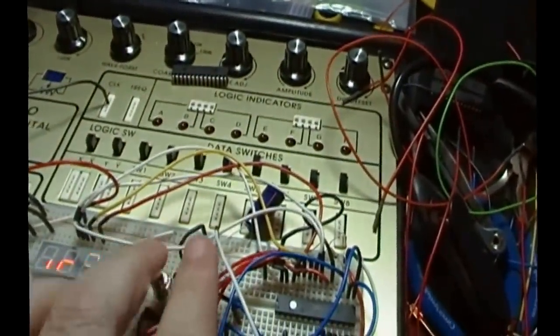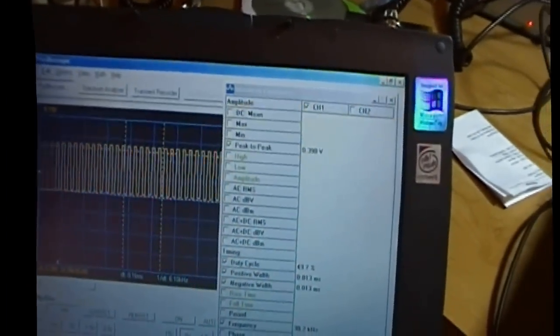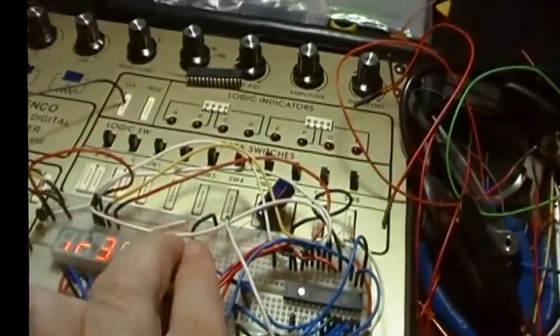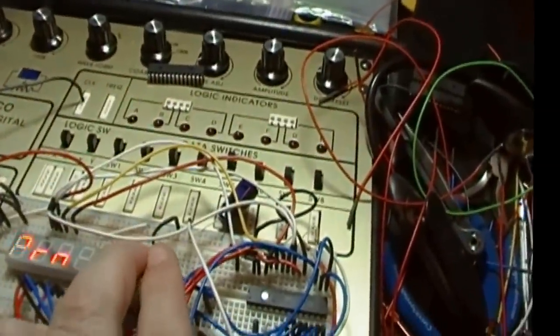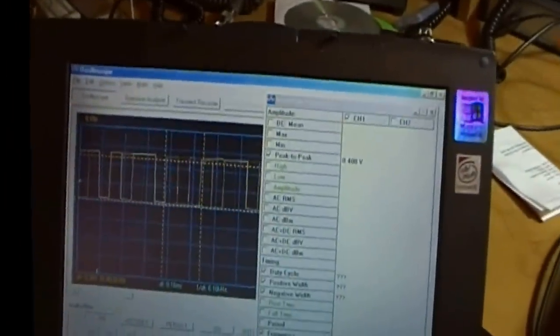Here's IR38. And what that does is that basically just outputs 38 kilohertz modulated signal, like to drive an infrared LED, for example. Here's the pseudo random generator, which generates just a random pulse train.